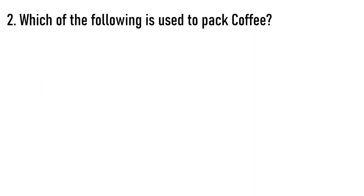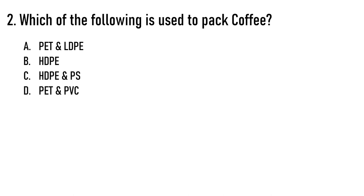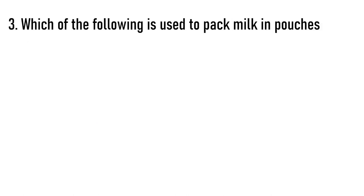Next question: Which of the following is used to pack coffee? Options are PET and LDPE, HDPE, HDPE and PS, or PET and PVC. The correct option is option A — PET and LDPE.